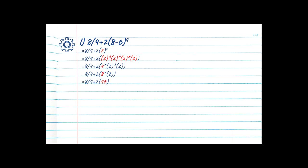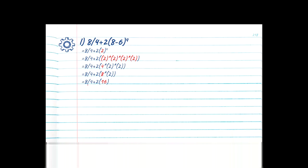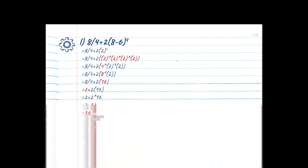No more exponents — step 2 is complete. Step 3: division and multiplication in the order they appear. We have 8 divided by 4 right out of the gate: 8 divided by 4 is 2, drop the rest. We continue looking: 2 times 2 opening bracket — a number directly beside a bracket means expand and multiply. So it's 2 times 16: 2 times 16 is equal to 32, drop the rest. Division and multiplication done — step 4: 2 plus 32 gives us 34. Our final answer is 34.